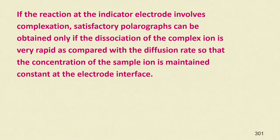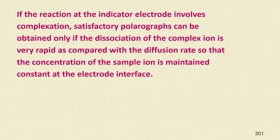If the reaction at the indicator electrode involves complexation, then satisfactory polarographs can be obtained only if the dissociation of the complex ion is very rapid compared to the diffusion rate, so that the concentration of the sample ion is maintained constant at the electrode interface.